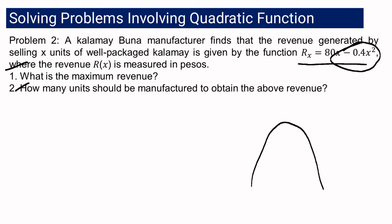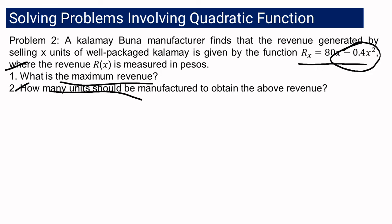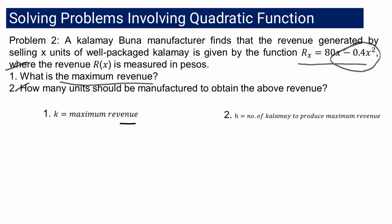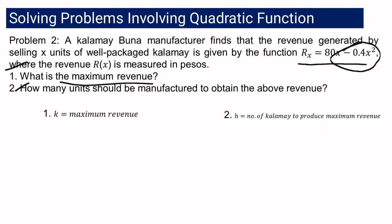Since the quadratic term is negative, the graph opens downward, meaning the vertex is at a maximum point. Therefore the function R of X will have its maximum value. For question number 1, we are looking for the value of K — the maximum revenue. For question number 2, the number of kalamay units to produce that maximum revenue will be the value of H. To get K, we use K equals (4AC minus B squared) over 4A.